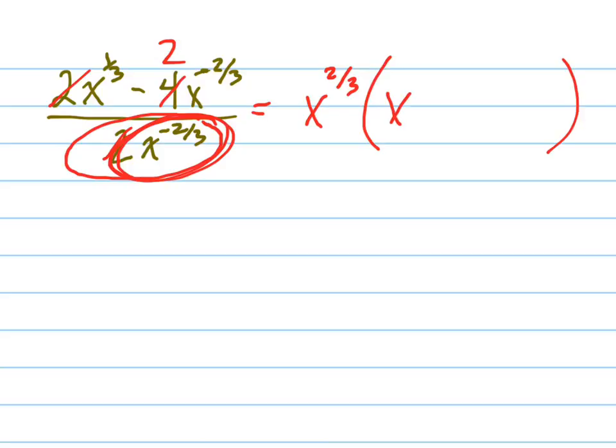So this becomes x to the 1 third minus 2x to the negative 2 thirds. And that was the rule that says that when you have a negative power, you can flip the side that it's on in terms of the fraction and turn it into a positive power.